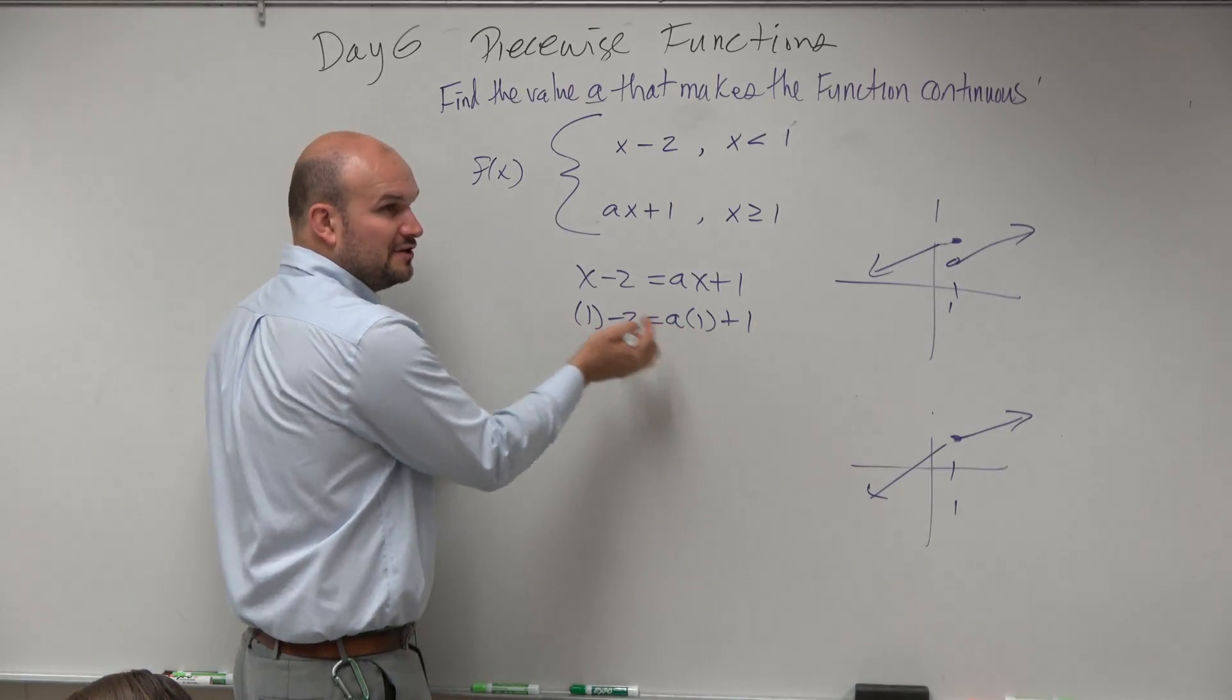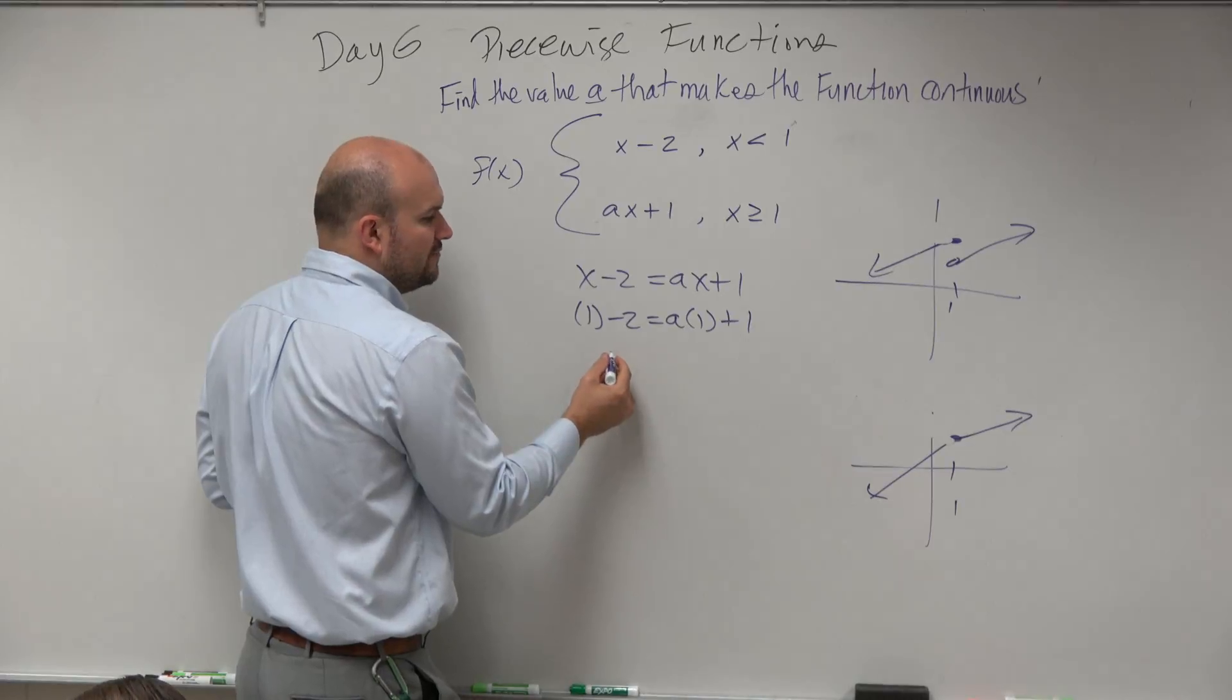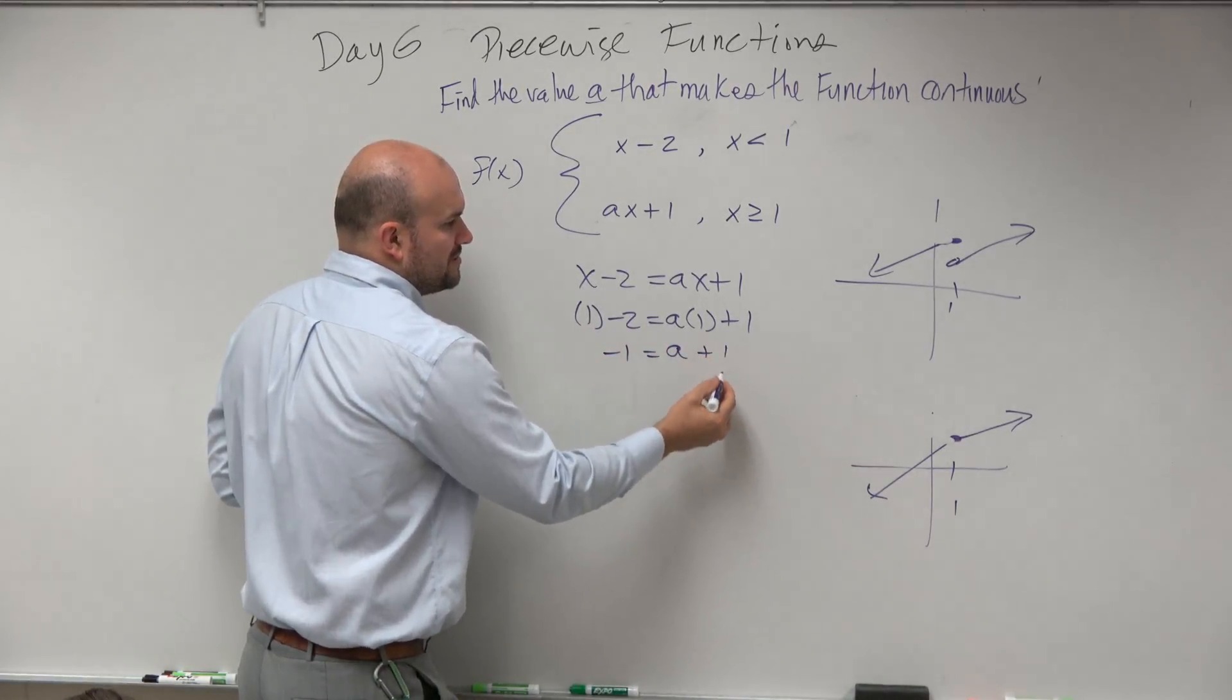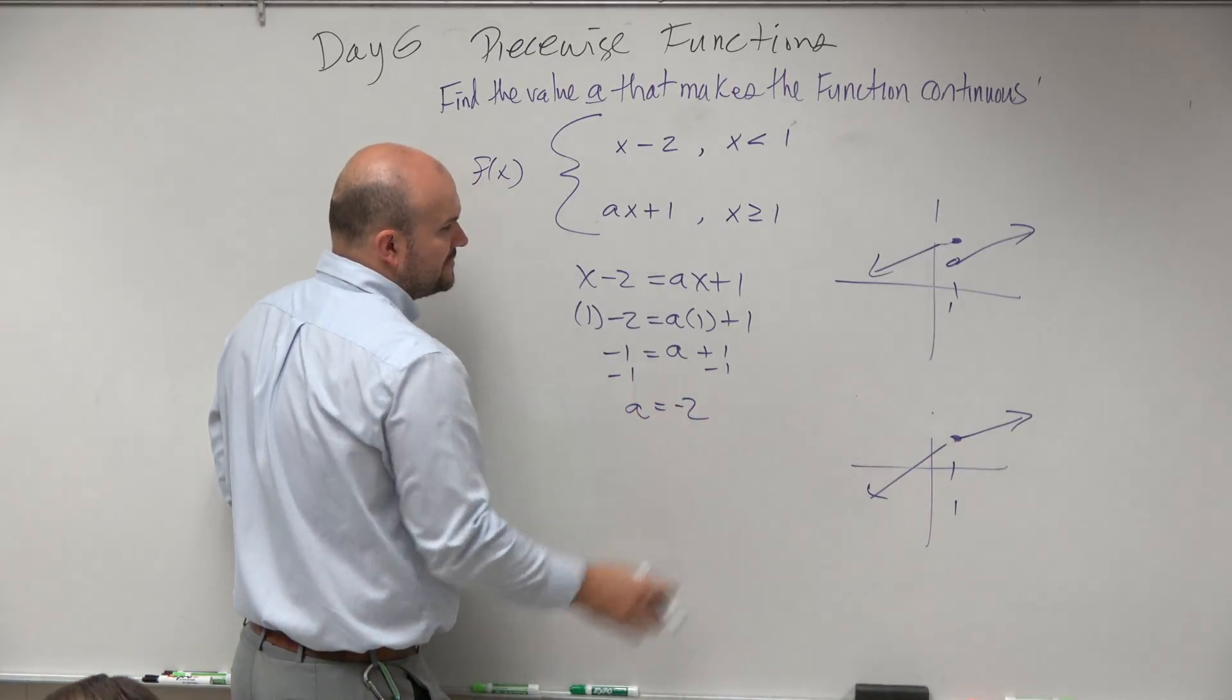Now, do we have an equation that we can just solve for A? Yeah. So 1 minus 2 is negative 1 equals A times 1 is 1. Plus 1, minus 1, minus 1. A is equal to negative 2.